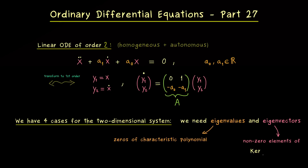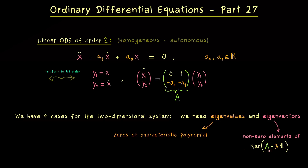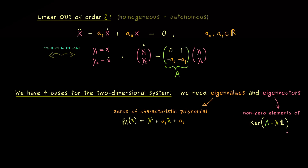As a quick reminder, the eigenspace is given as the kernel of (A minus lambda times the identity matrix). If lambda is not an eigenvalue of A, then this kernel is trivial, containing only the zero vector. The characteristic polynomial, which we call P_A(lambda), can be written directly from the original ODE: lambda squared plus a1 times lambda plus a0. We want to find the values where this equals zero.